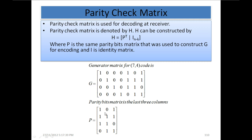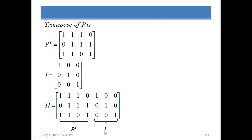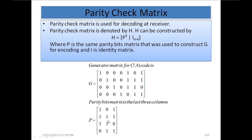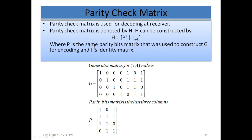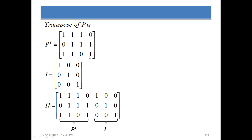P is equal to: row 1: 1 1 0, row 2: 0 1 1, row 3: 1 1 1, row 4: 1 0 1. After that, we take the transpose of P — changing columns to rows — so the column 1 1 1 1 becomes row 1 1 1 1, column 0 1 1 1 becomes row 0 1 1 1, and column 1 1 0 1 becomes row 1 1 0 1.